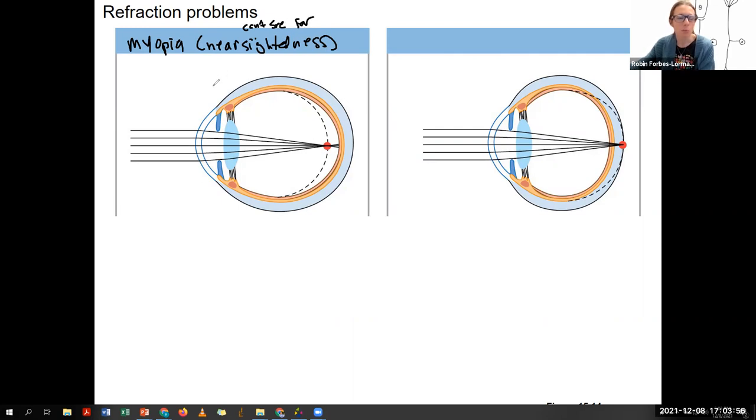So this happens when either the eyeball is too long, too deep. So it could be an anatomical thing, like genetic anatomical thing, or the lens is too round. And really it's a combination of those two. The lens is too round for this eye. So we are not able to focus on far away things.